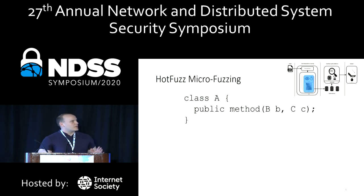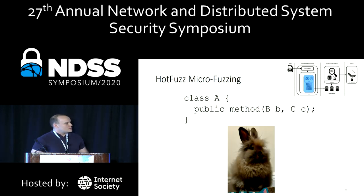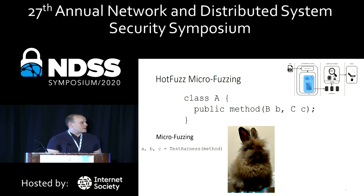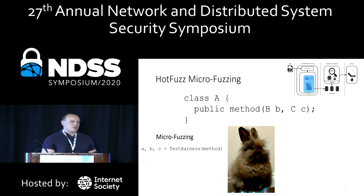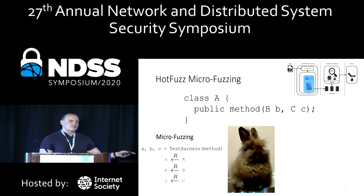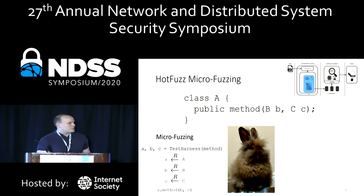Now that we've introduced the whole pipeline of HotFuzz, let's talk about the details of implementing micro-fuzzing. Each HotFuzz instance takes a method under test, which may be a method contained in any arbitrary Java class taking instances of arbitrary type. The first thing it needs to do is automatically generate a test harness for this individual method. The test harness for a given Java method is simply all of the Java variables required to successfully invoke that method. HotFuzz generates those values at random and is able to execute the given method.